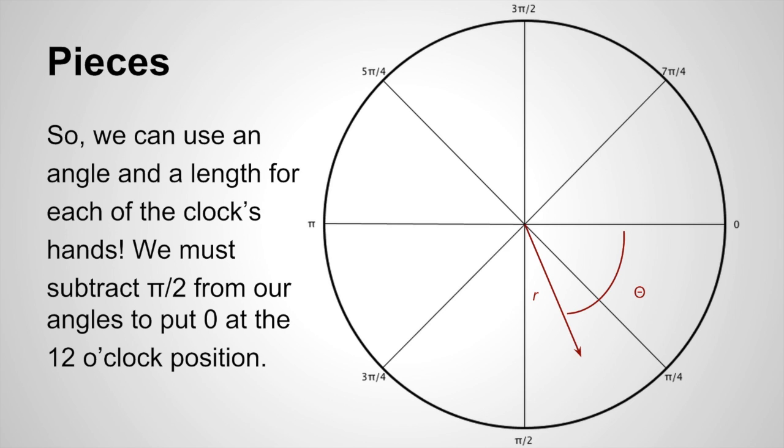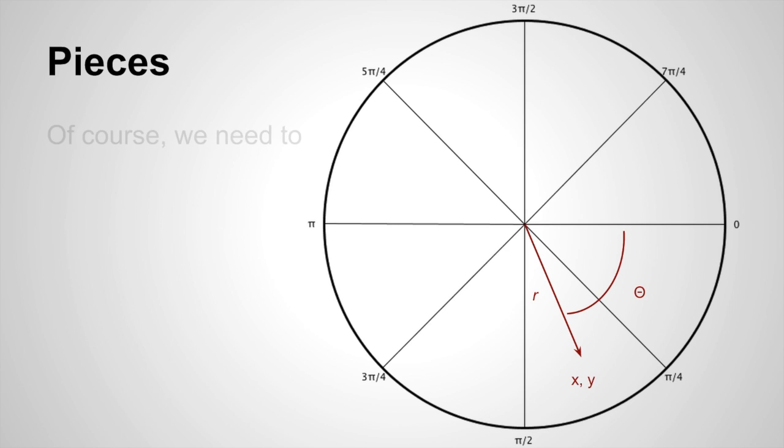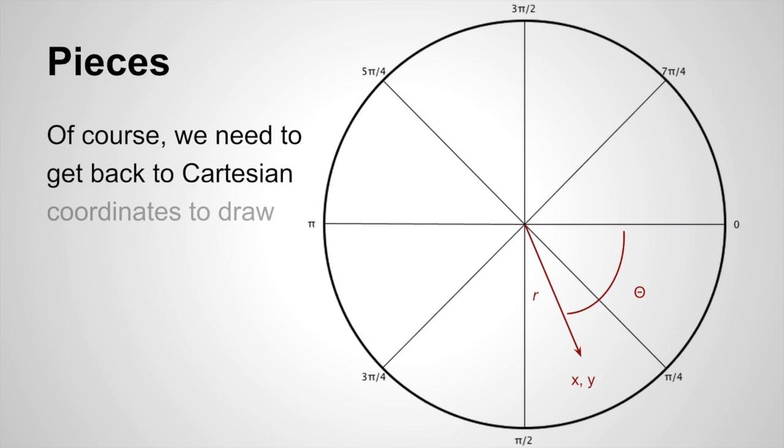Now ultimately we have to do one more thing. We need to get back to Cartesian coordinates in order to draw our lines, because polar coordinates don't do us any good—we need the actual x, y coordinates at this point.